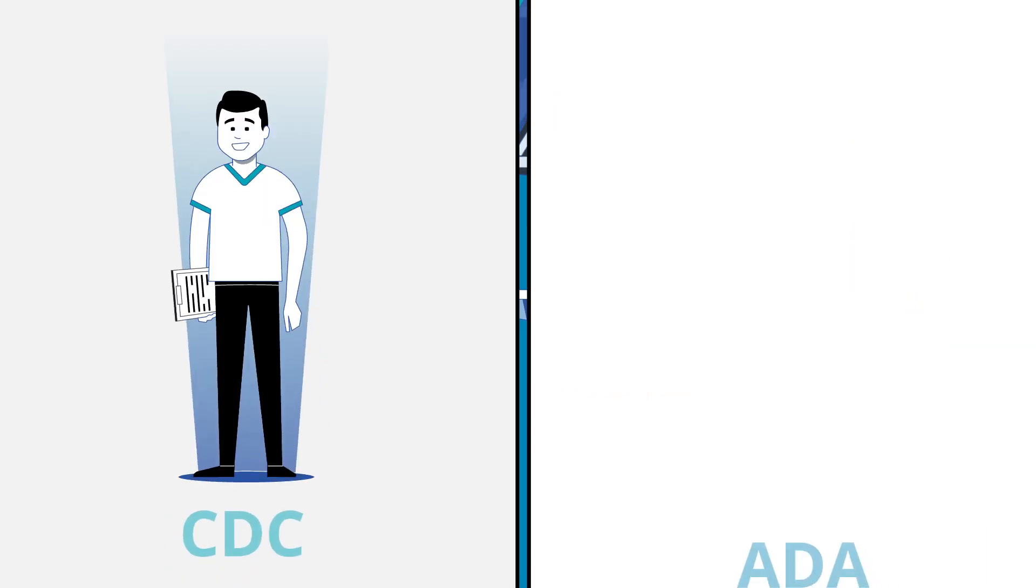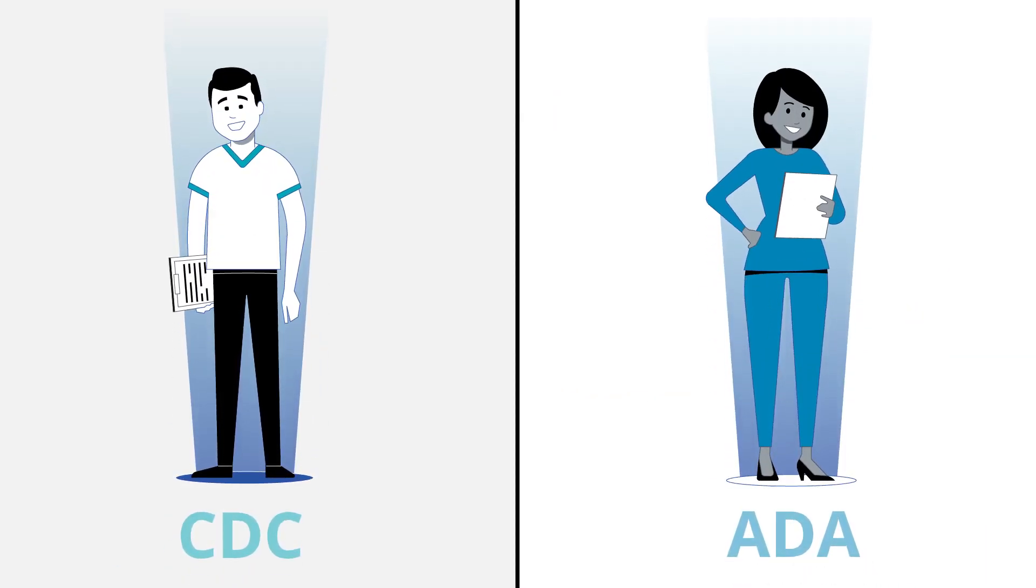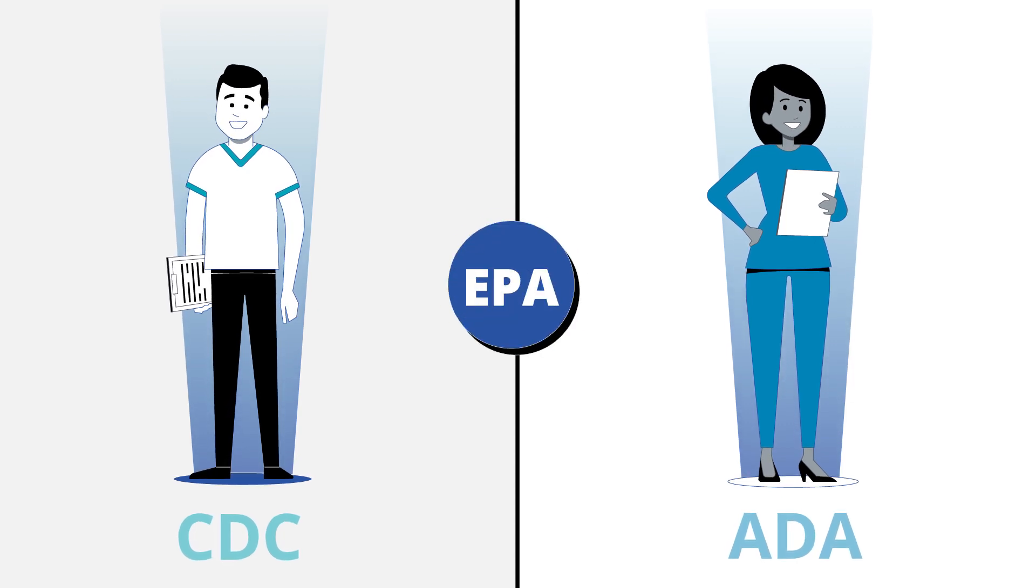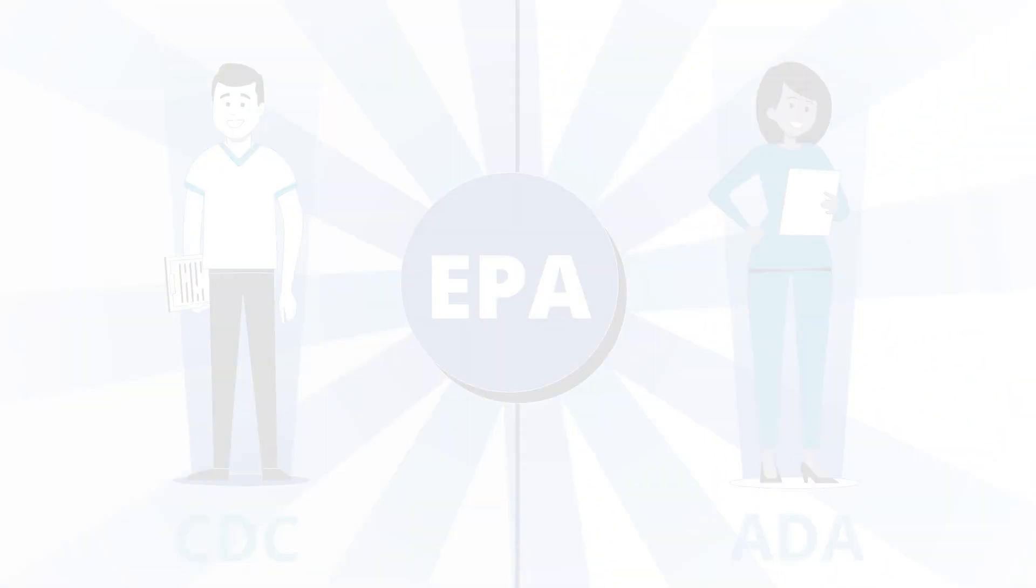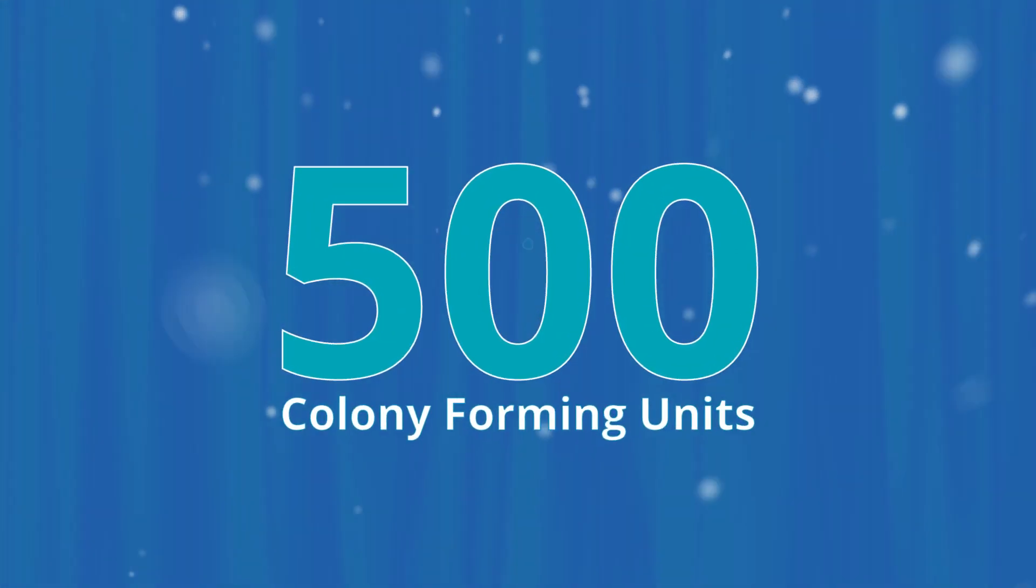Both the Centers for Disease Control and the American Dental Association recommend that water used in dental units meets EPA standards for safe drinking water by having a heterotrophic bacteria count of no more than 500 colony forming units per milliliter.